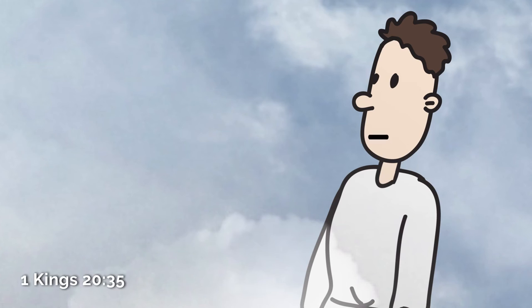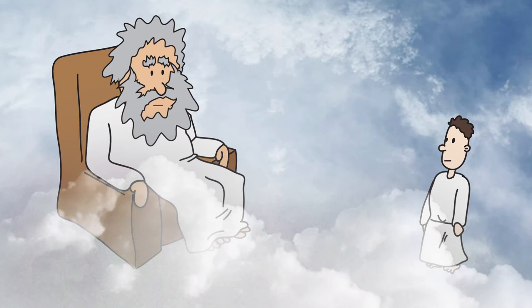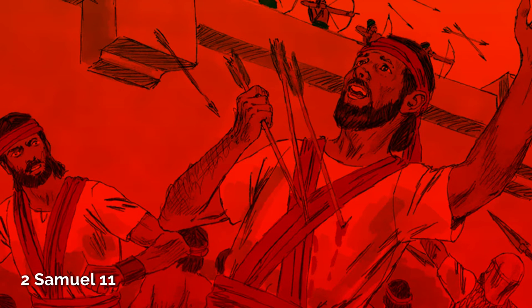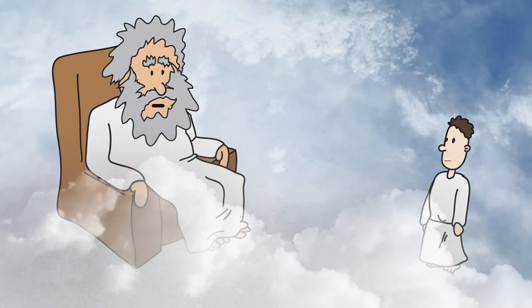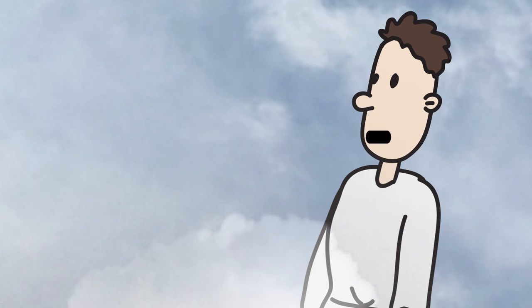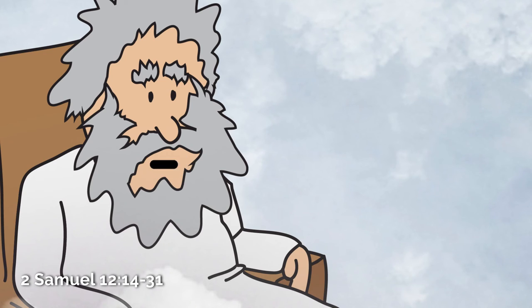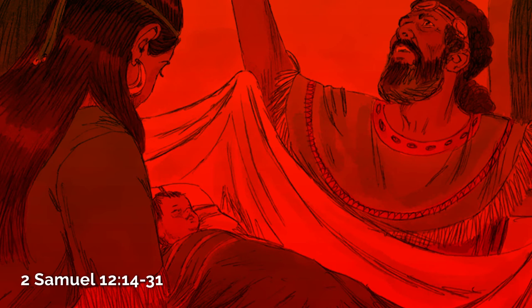What about that time a prophet asked his neighbor to hit him and the neighbor refused, so you sent a lion to kill him? Well, justice. Well, what about King David? He had a man killed so he could marry his widow. I spared David out of mercy. But he violated so much of your law. He coveted his neighbor's wife and committed murder to get her. Well, he didn't get off scot-free. I killed his son.